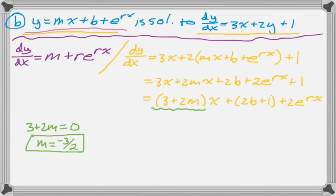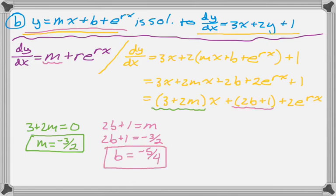Now I'm going to look at the constant terms. So for that, it's 2b plus 1. For the other one, it's just m. So I know that 2b plus 1 must equal m. And I already solved for m, so I can get this. So now I know what b is.